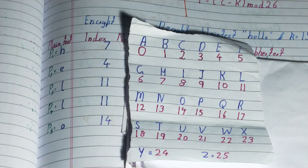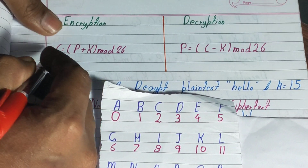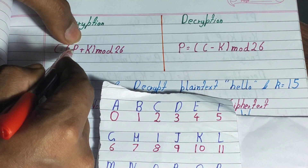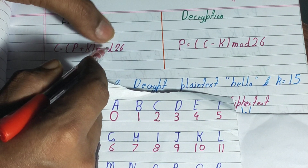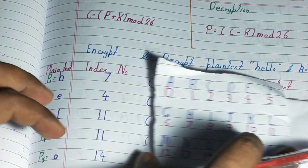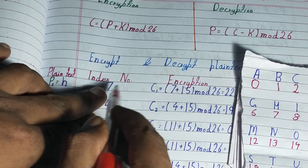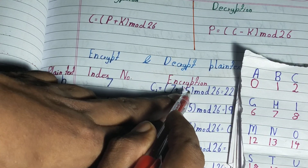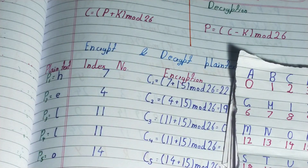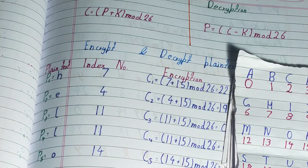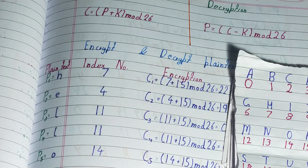Now we have to encrypt using the formula: C equals plaintext index plus key k, mod 26. Our key is 15. For each letter we take its index number, add 15, and apply mod 26. Many of you get confused about how to find the mod value, so I'll show you using a calculator.